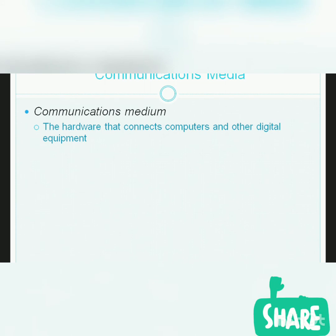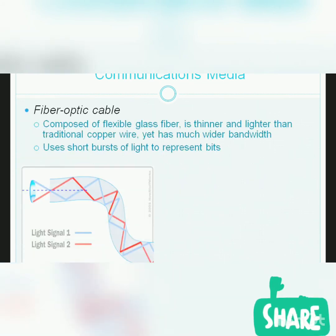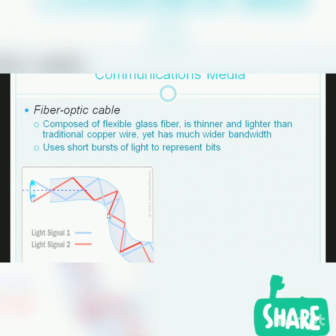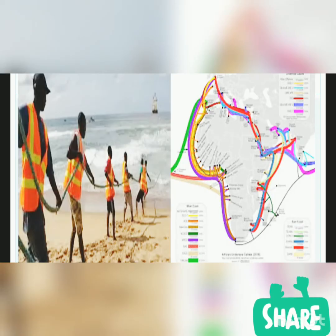Next, we require communication media such as twisted pair cable, coaxial cable, or optical fibers. Here I am showing you the optical fiber — information is carried in the form of light signals. These blue and red lines are the light signals that get reflected inside the glass fiber. Optical fiber is basically a very thin glass fiber, and information gets transferred in the form of light through it. Optical fibers shine even in the darkness.